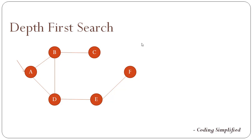First, let's see all the properties of the depth first search algorithm. As its name suggests, we first go into the depth of an element, and once we cover all the depth, then we go to its next neighbor. For example, starting from point A on a graph, we go to B first, and then rather than going to D — the next neighbor of A — we first go to C, covering the depth. Once we've covered B and C, then we come to D, then E and F.